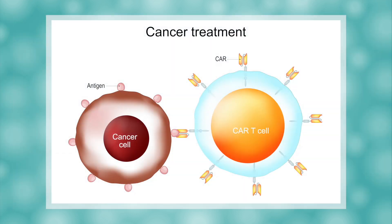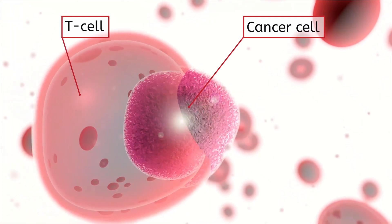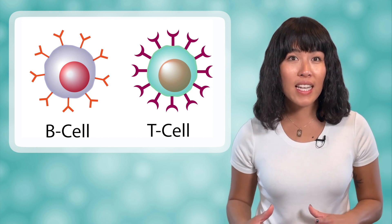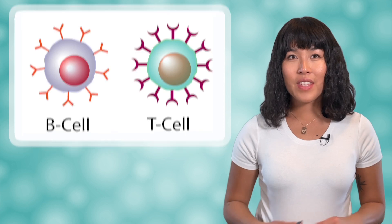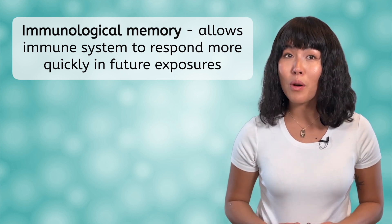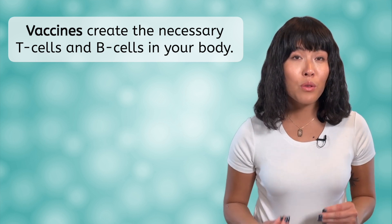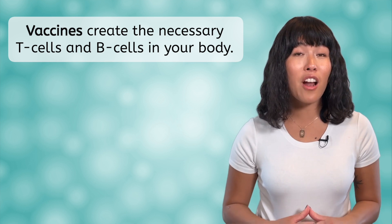But T-cells don't only fight off pathogens. Certain types of T-cells are also able to recognize and destroy cancer cells, and treatments involving the transfer of specialized T-cells to patients fighting cancer have shown promising success. When the immune system encounters a new antigen that it hasn't seen before, it responds by producing specific T-cells and B-cells designed to recognize and attack the cell attached to the antigen. This process creates immunological memory, which allows the immune system to respond more quickly and effectively to future exposures to the same antigen. This is how vaccines work — they introduce an inactive form of the pathogen so that the body can create the necessary T-cells and B-cells, and if an active form is ever encountered in the future, your immune system will already be prepared.